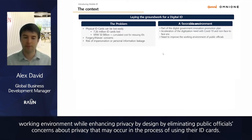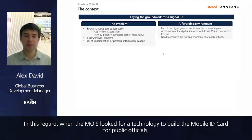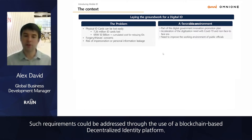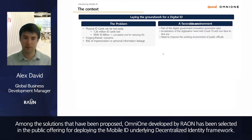In this regard, when MOIS looked for a technology to build the mobile ID card for public officials, self-sovereign identity was one of the main criteria the selected technology had to enable. Such requirements could be addressed through a blockchain-based decentralized identity platform. Amongst the solutions proposed, OmniOne developed by RAN was selected in the public offering for deploying the mobile ID's underlying decentralized identity framework.